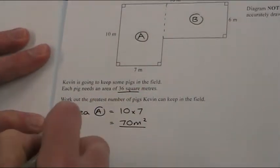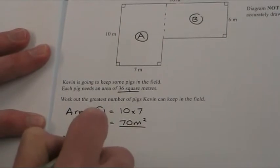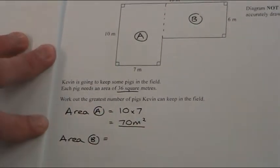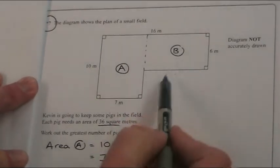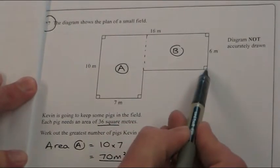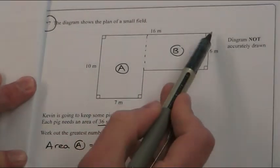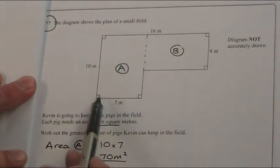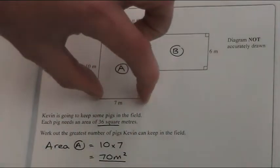Now I'm going to put area of B. This is where it gets a little bit harder, because if we go up here, we don't know how long this line is, but I can work it out. If this is 16 and this is 7, if you can imagine this line coming up here...